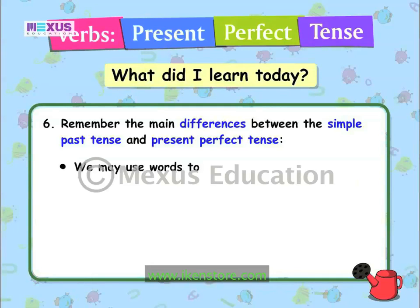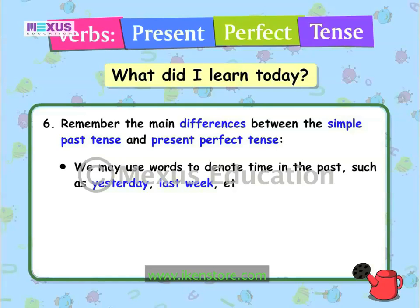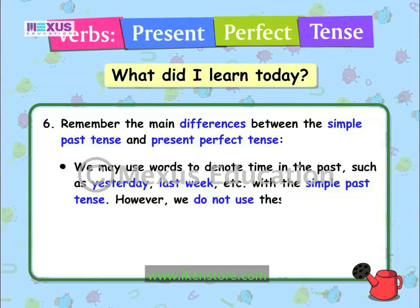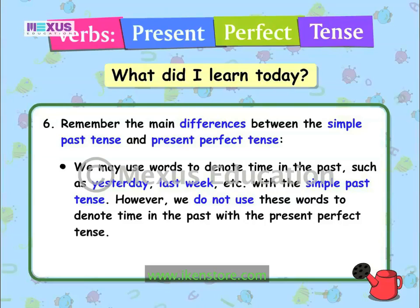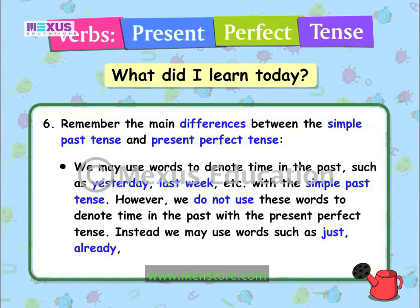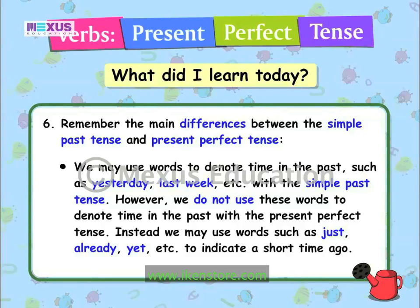Remember: we may use words to denote time in the past — such as 'yesterday', 'last week', etc. — with the simple past tense. However, we do not use these words with the present perfect tense. Instead, we may use words such as 'just', 'already', 'yet', etc., to indicate a short time ago. Bye!